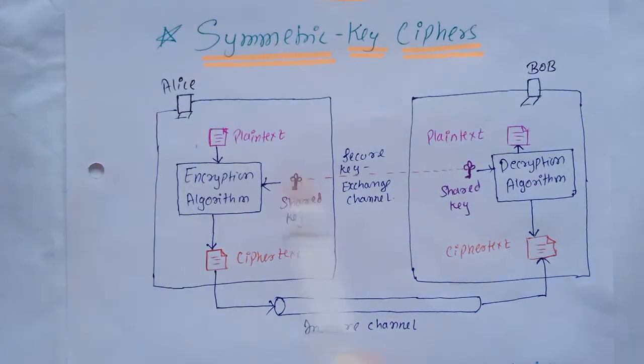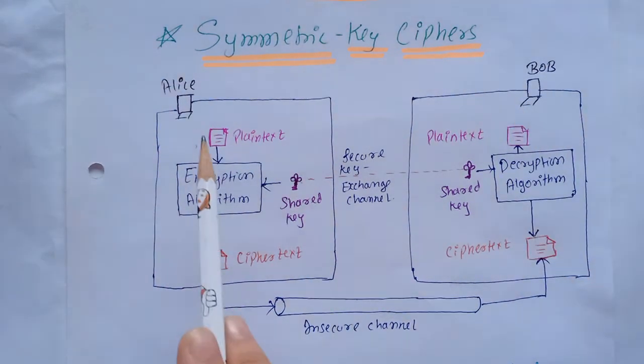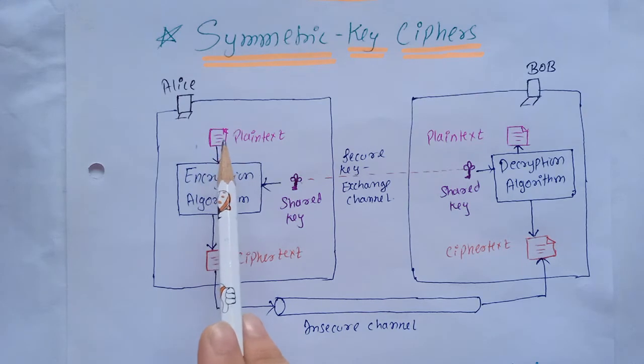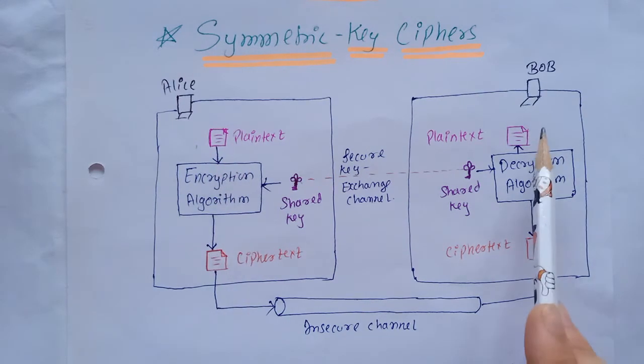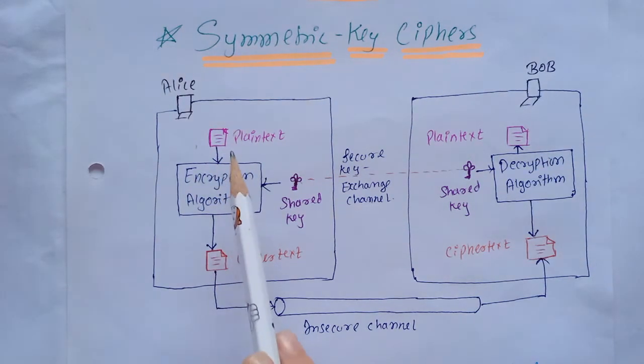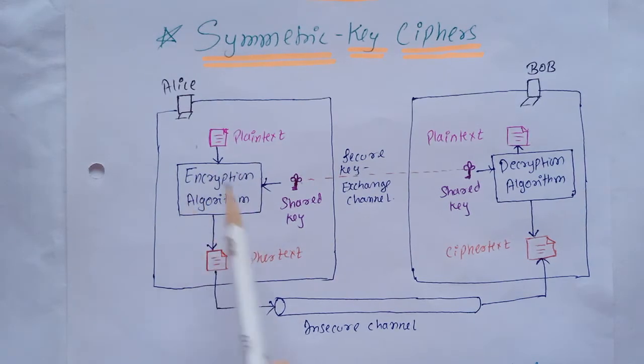Here Alice is the sender and Bob is the receiver. The plain text is the message which Alice wants to send to Bob. Alice encrypts the message using the encryption algorithm which requires a shared key. The key is the same for Alice and Bob.